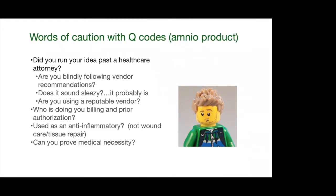Make sure whoever is doing your billing knows what they're talking about. What piqued my interest initially with billing this to private insurance is that Blue Cross Blue Shield, United, and Aetna have a prior authorization process. If you have a patient you want to inject amniotic tissue into for an osteoarthritic knee, you can take that patient's health information and do what's called a prior authorization — you submit the diagnosis and the code, and the insurance company will tell you whether or not they're going to cover that code. You have to prove medical necessity and that the therapy matches the patient's diagnosis.